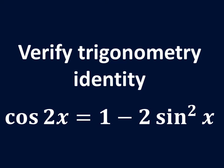In this video, we will learn to verify the trigonometry identity cosine of 2 times x is equal to 1 minus 2 times square of sine of x.